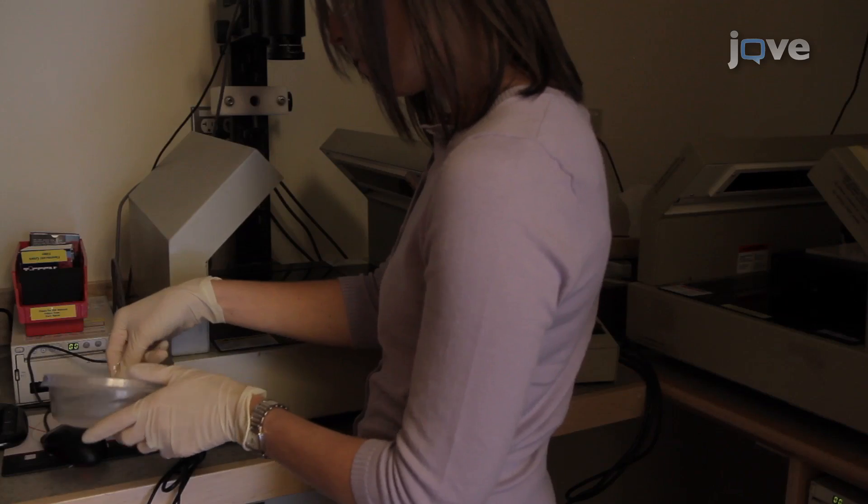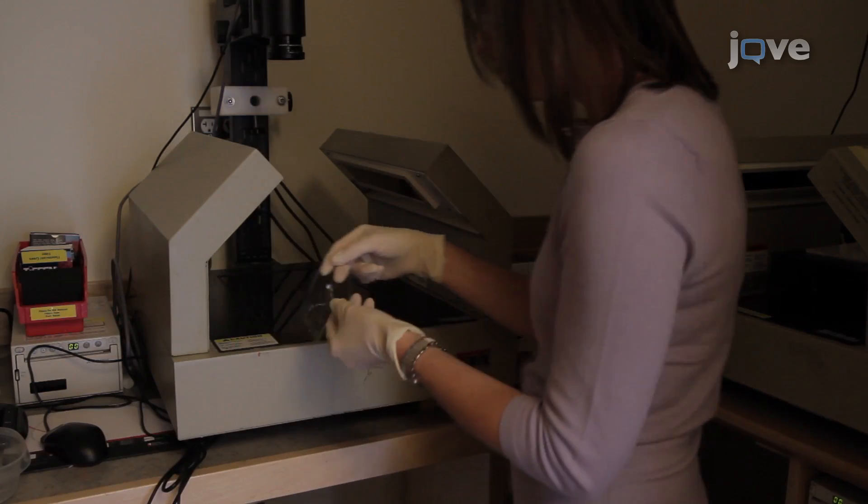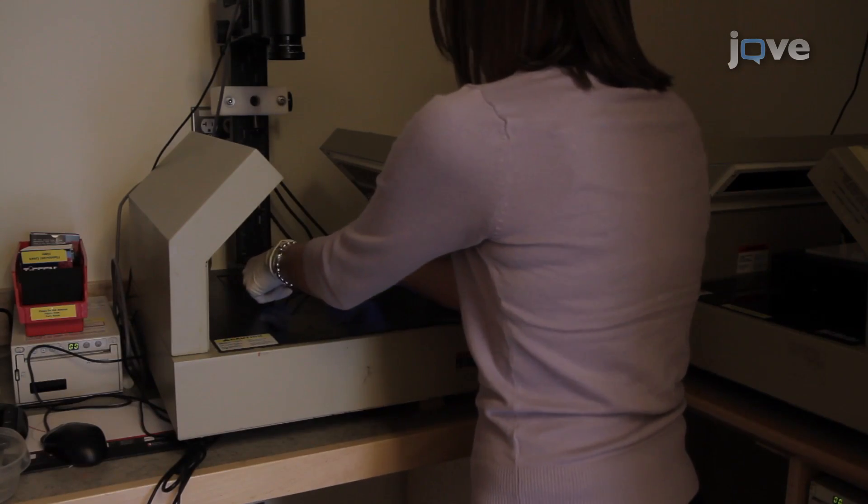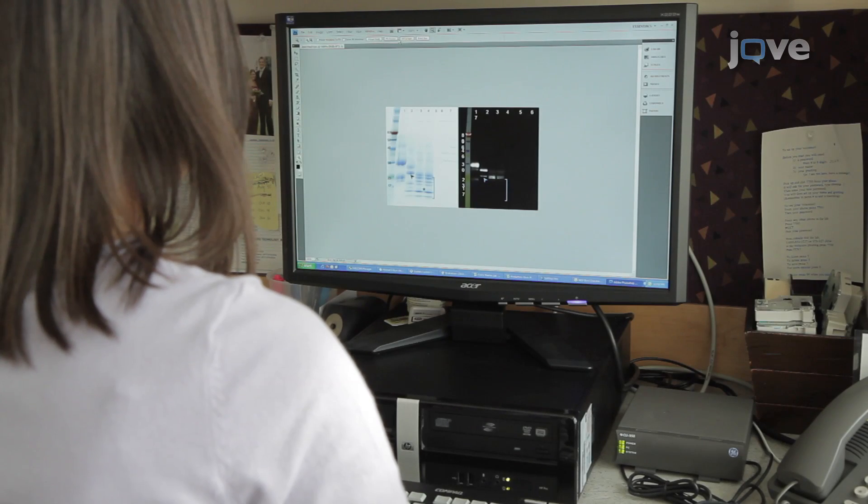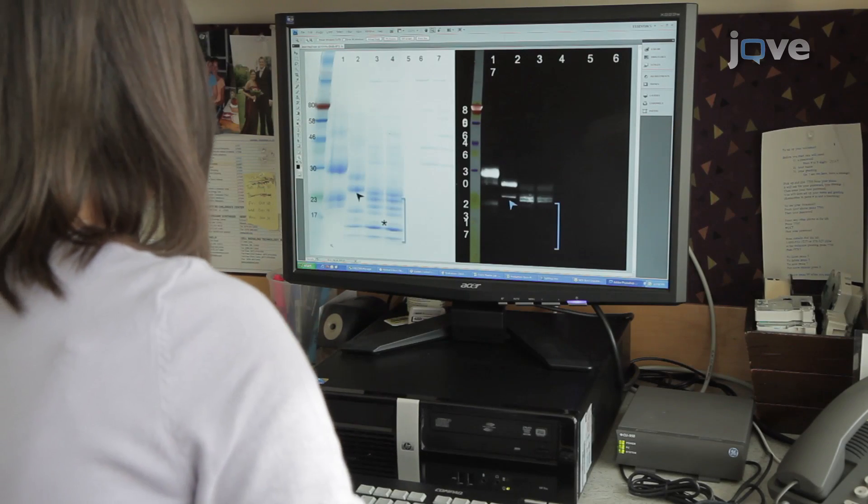Then, record the images with a UV transilluminator at 300 nanometers. As a final step, compare the images of the Coomassie stained gel with the Pro-Q emerald stain gel.